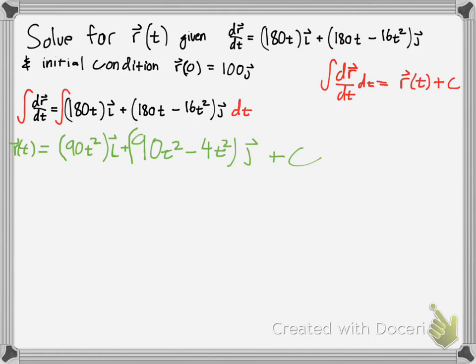The initial condition is just 100j, but what does that look like? That's really 0i plus 100j. Simply to get that constant out of there, and plug our initial condition into the picture, you simply add the components up.